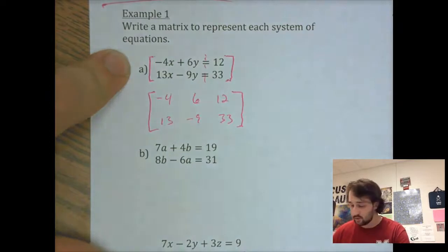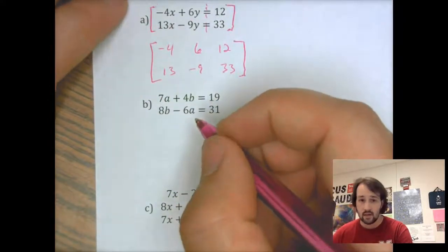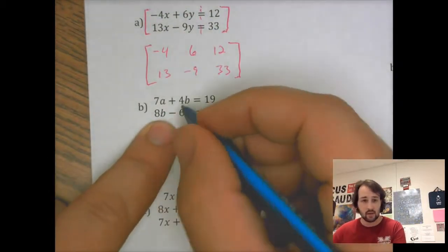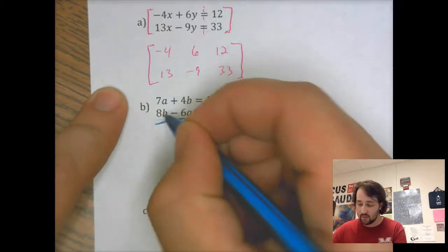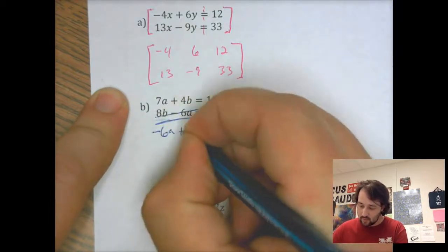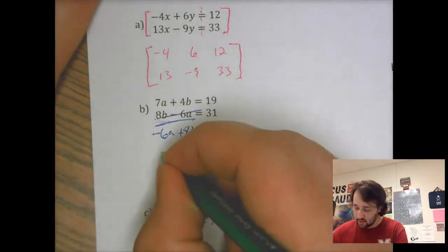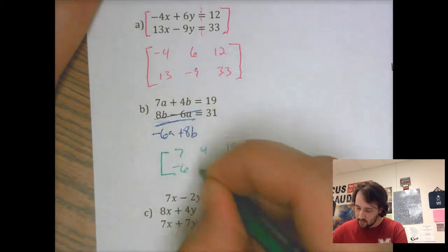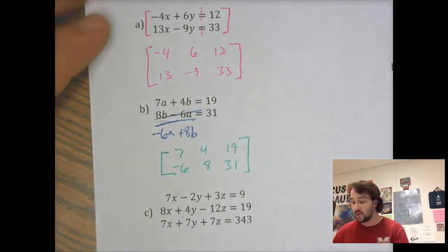I'll show you in a minute how we use this. Likewise, setting up a system of equations with part B — again, pause the video and feel free to try this. The very first thing I look for is making sure my variables are right in line with each other. Notice here in this second equation I have 8B minus 6A. I want to reorder this such that it becomes negative 6A plus 8B. So now I can write the matrix: 7, 4, 19 and then negative 6, 8, 31. That would be my matrix. It's super important to make sure the variables are all in line before we actually write our matrix.